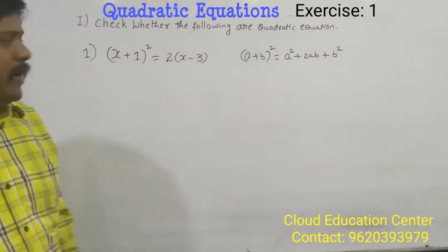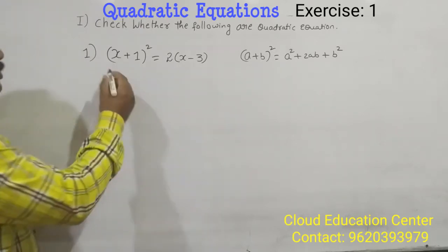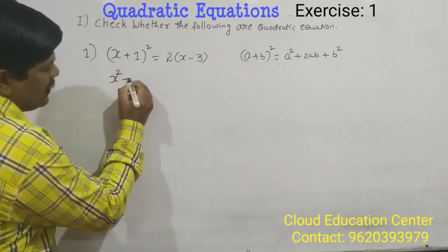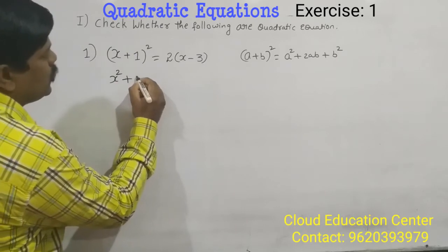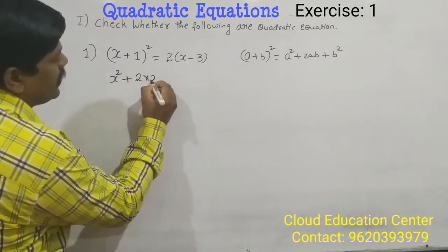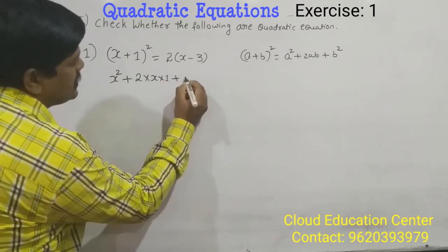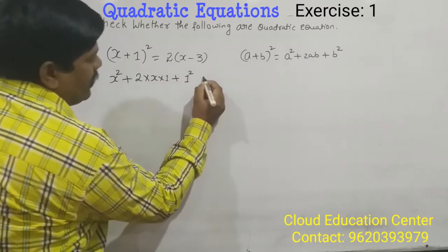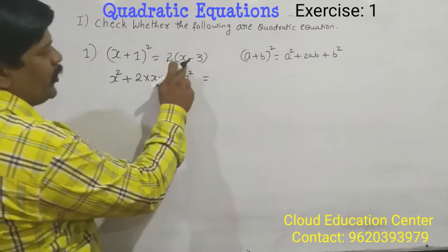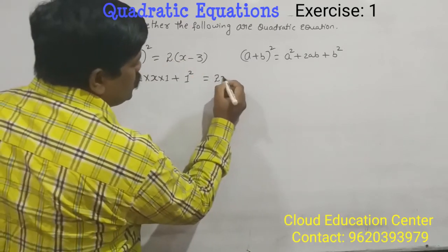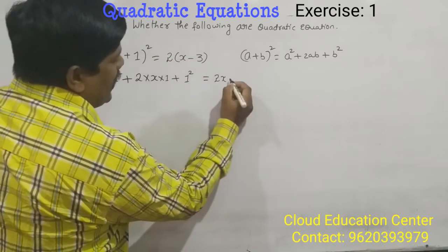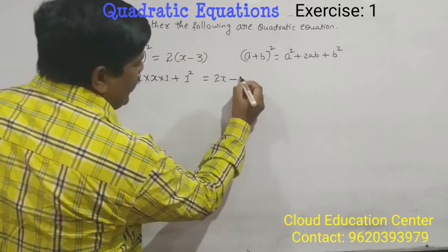Okay, use that formula so that it become x square plus 2 into x into 1 plus 1 square is equal to 2 into x is 2x minus 2 into 3 is 6.